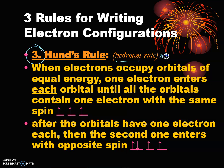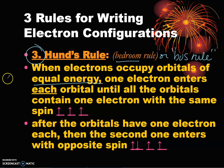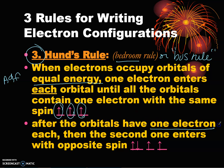Rule number three is Hund's rule — I call this the bedroom rule or the bus rule. It says: when electrons occupy orbitals of equal energy — the p, d, and f orbitals — one electron enters each orbital until all orbitals contain one electron with the same spin. So one electron goes here, then it spreads to the next, then the next; after all are half-filled, it doubles up in the first one.